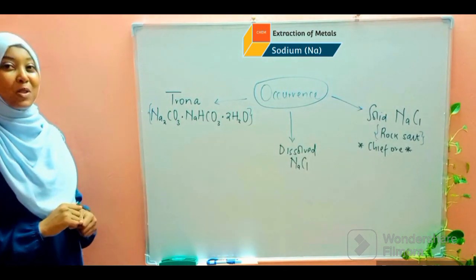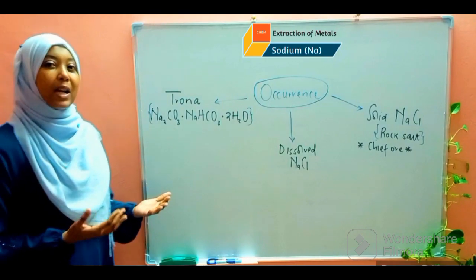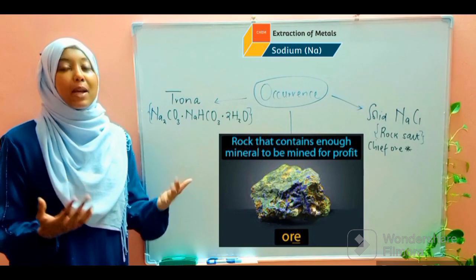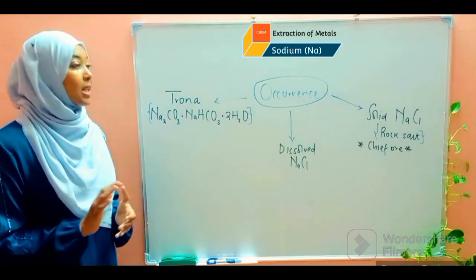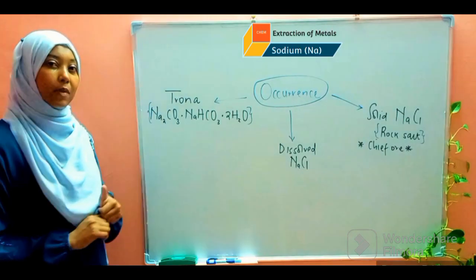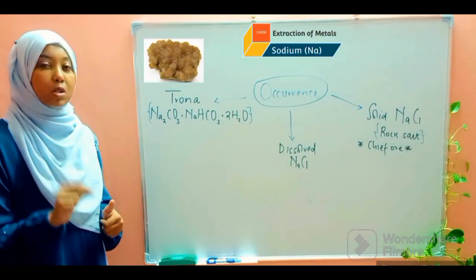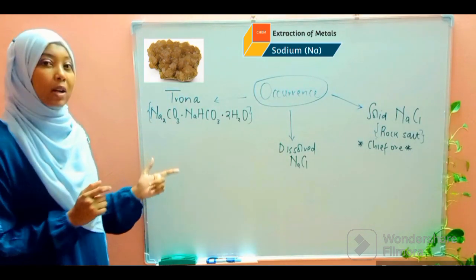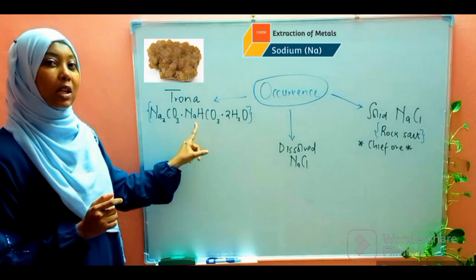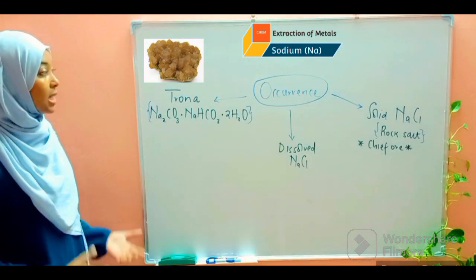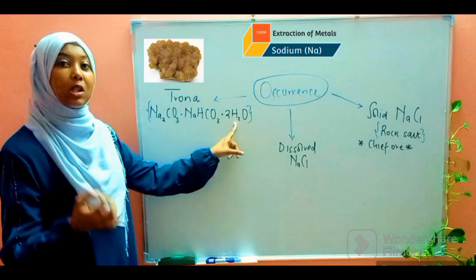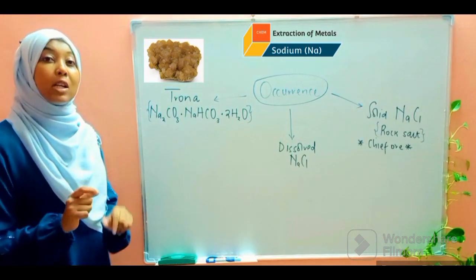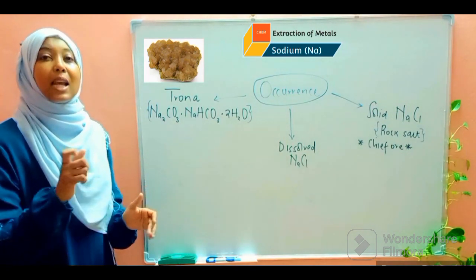For the first part of our lesson, we are going to discuss occurrence — what are the main sources of sodium, or from which ores is sodium extracted. Now there are three sources. The first is trona. Trona is a double salt, which simply means it contains two types of salts: sodium carbonate and sodium hydrogen carbonate. It also has water of crystallization, which makes trona a hydrated salt. Trona is commonly found in salty lakes like Lake Ngadi.